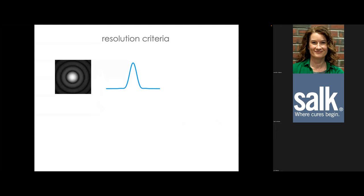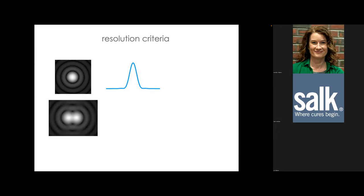Resolution means distinguishing two point sources. Each point source is imaged as a Gaussian, so the question is: how far apart do they have to be before you can distinguish those two Gaussians as separate? In a real sample, you can't see individual PSFs — all fluorophores labeled with the same fluorophore will add their PSFs together. So the question is how far apart they must be for you to be confident they're two objects.